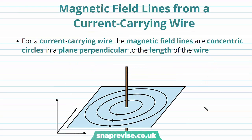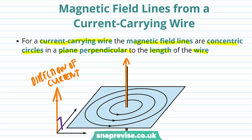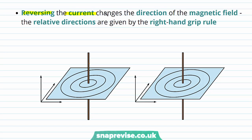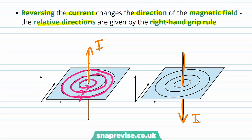Now we're going to discuss magnetic field lines from a current carrying wire. For a current carrying wire the magnetic field lines are concentric circles in a plane perpendicular to the length of the wire. Here we have our current carrying wire with the current flowing this way, and the magnetic field lines are in the plane perpendicular to the wire, forming concentric circles around it. Notice that if we reverse the current it will change the direction of the magnetic field — the field lines will also reverse direction.